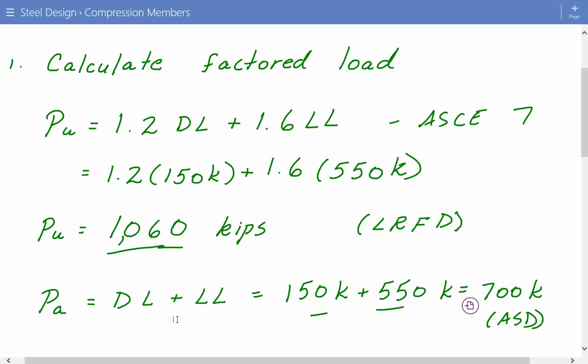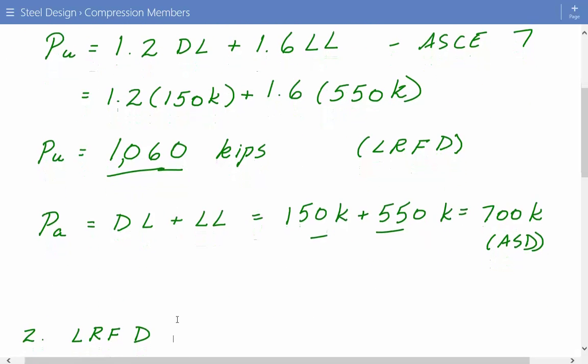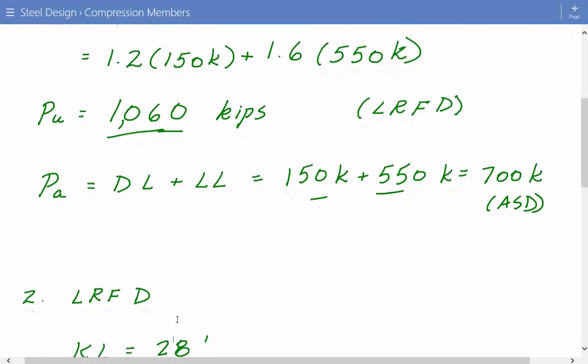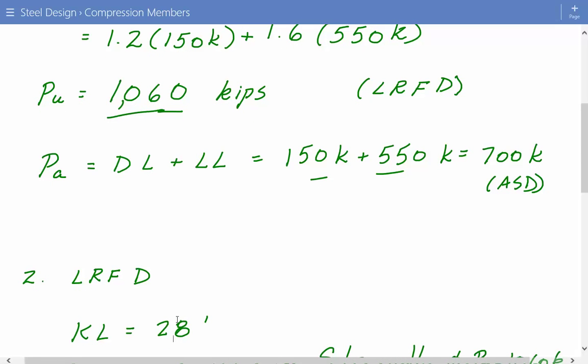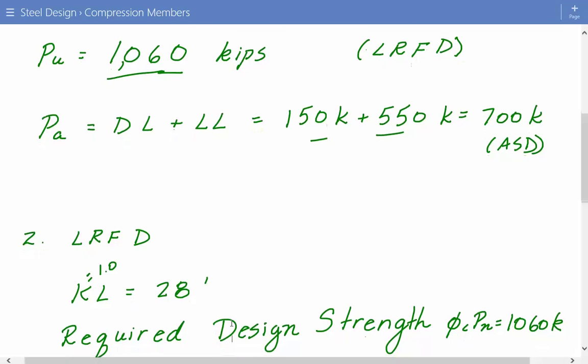Now we'll look at the LRFD solution first. We know the effective length is 28 feet. Since it's pinned at both ends, k equals 1 and the length is 28 feet, so k times L is 28 feet. The required design strength that we need to find is a section with a design strength of at least 1,060 kips, because that's what we calculated in the previous step.